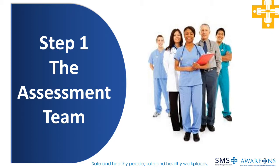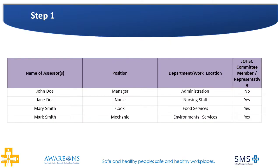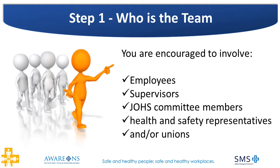Step 1 asks: who will be completing the risk assessment? The Step 1 tab of the assessment directs the employer to determine who will be selected to take part in conducting the assessment. It provides an area for the employer to list these individuals, including their name, position, department or work location, and whether they are a member of the Joint Occupational Health and Safety Committee. Although optional, it is considered a leading practice to establish a dedicated workplace violence committee — for example, your Joint Occupational Health and Safety Committee, otherwise known as JOSH.